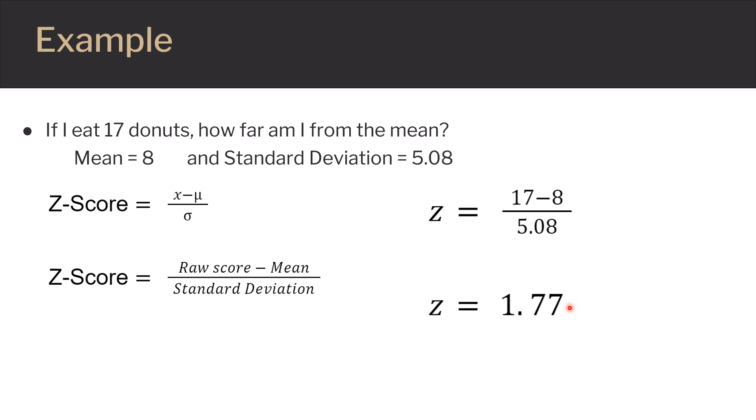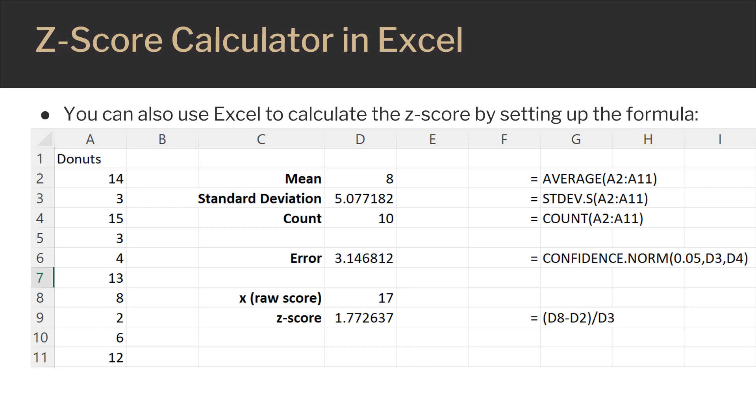Keep in mind, your Z-Score should always be rounded to two decimal places. As stated previously, you can also use Excel to calculate the Z-Score by setting up the formula.